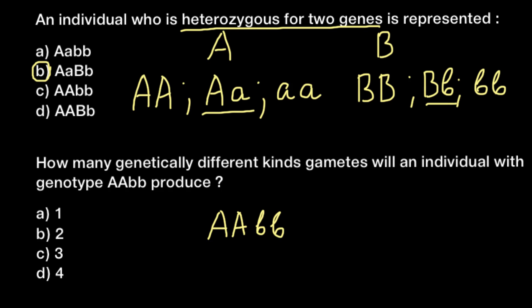So the first combination would be capital A small b. Then this capital A can combine with the second small b, so the same combination capital A small b. And this allele may combine with this and may combine with this. So all four combinations of the gametes as you see would be of the same genotype, that is capital A and small b. So only one distinct genotype as you see here is possible for the gamete, and this is answer A.